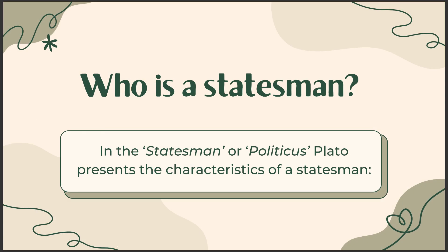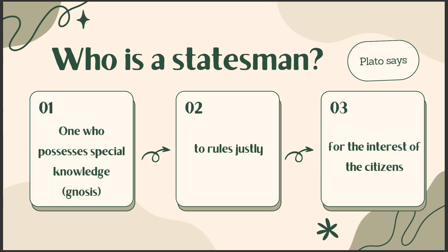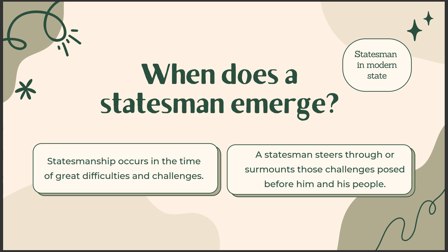Who is a statesman? In the Statesman or Politicus, Plato presents the characteristics of a statesman. Plato says one who possesses special knowledge — gnosis — to rule justly for the interest of the citizens. Statesmanship occurs in the time of great difficulties and challenges. A statesman steers through or surmounts those challenges posed before him and his people.